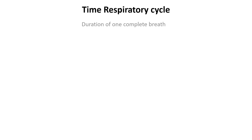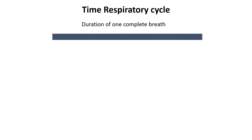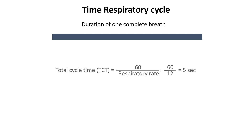The time of a respiratory cycle refers to the total duration of one complete breath, including both inspiration and expiration. It is determined by the respiratory rate and expressed as the total cycle time. For example, if the respiratory rate is 12 breaths per minute, the total cycle time would be 5 seconds per breath.